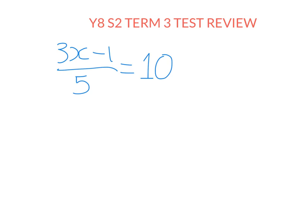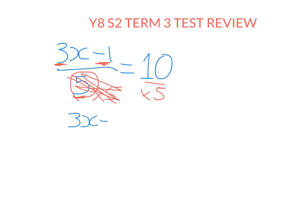So how do we find the solution? We undo everything that's been done to the pronumeral in the opposite order to BIDMAS, or the order of operations. Here I've taken x, timesed by three, then subtracted one, and then divided my answer by five to get ten. So when I am solving, I need to undo in the opposite order. Because I divided by five last, I need to undo this first — the way I undo dividing by five is timesing by five. So I'm going to do that to both sides first. Remember: what you do to one side of the equation, you must do to the other.